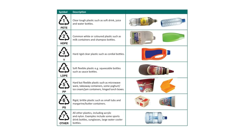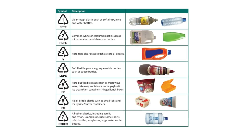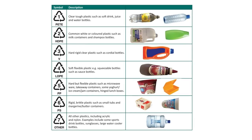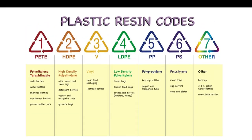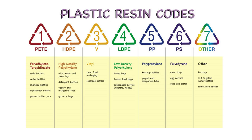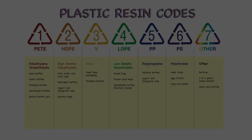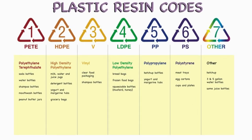This system was introduced in 1988 by the US Society of the Plastics Industry. This information will help you sort plastic materials more effectively for recycling. Plastics must be recycled separately with other like materials in order to preserve the value of the recycled material and enable its reuse.